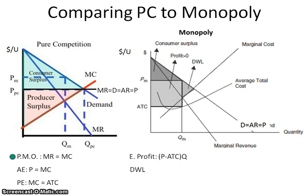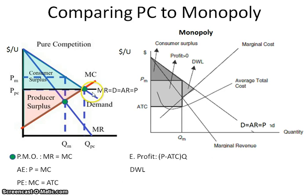The first formula here is our profit maximizing output. This is where marginal revenue equals marginal cost. You can see here for the perfectly competitive, it's where the marginal cost curve and the marginal revenue curve intersect. You can also see it here for the monopoly where you have your marginal revenue and your marginal cost. This is really important to recognize: a purely competitive firm will always produce a larger output than the monopoly.